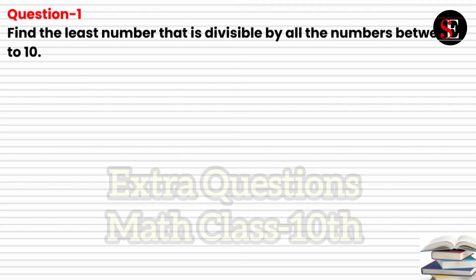Question number 1: Find the least number that is divisible by all the numbers between 1 to 10. This problem asks for the smallest number completely divisible by those numbers. The meaning of 'in between' is that you don't have to consider 1 and 10 themselves — any number you find must be divisible by 2 to 9.